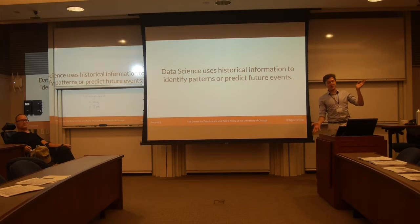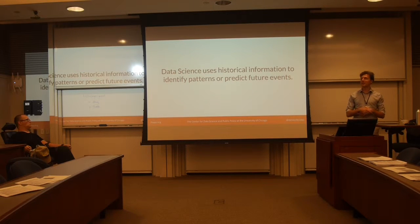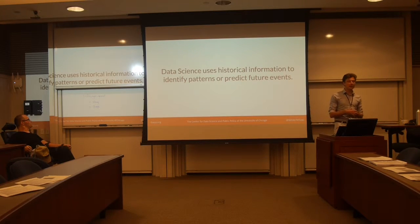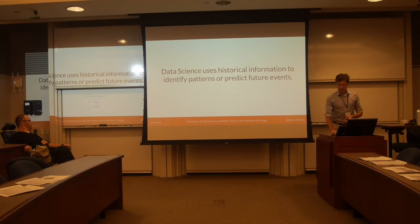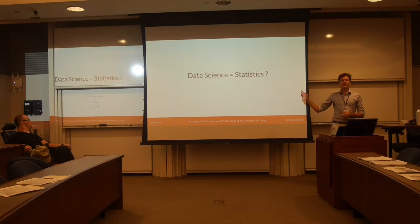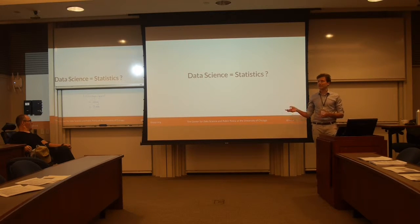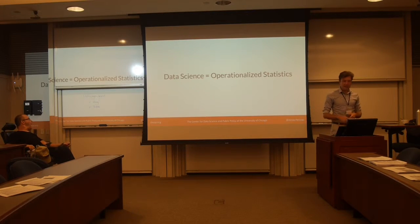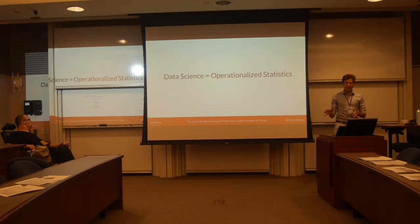Data science uses historic information to identify patterns and predict future events — a very vanilla definition. At the core of data science there's really just a bunch of algorithms that are good at generalizing from historic examples to future problems. You could ask, isn't data science just statistics? Statistics, after all, is the science of making inference from data. I'd say that's only partially true — they're a little bit different and kind of the same.